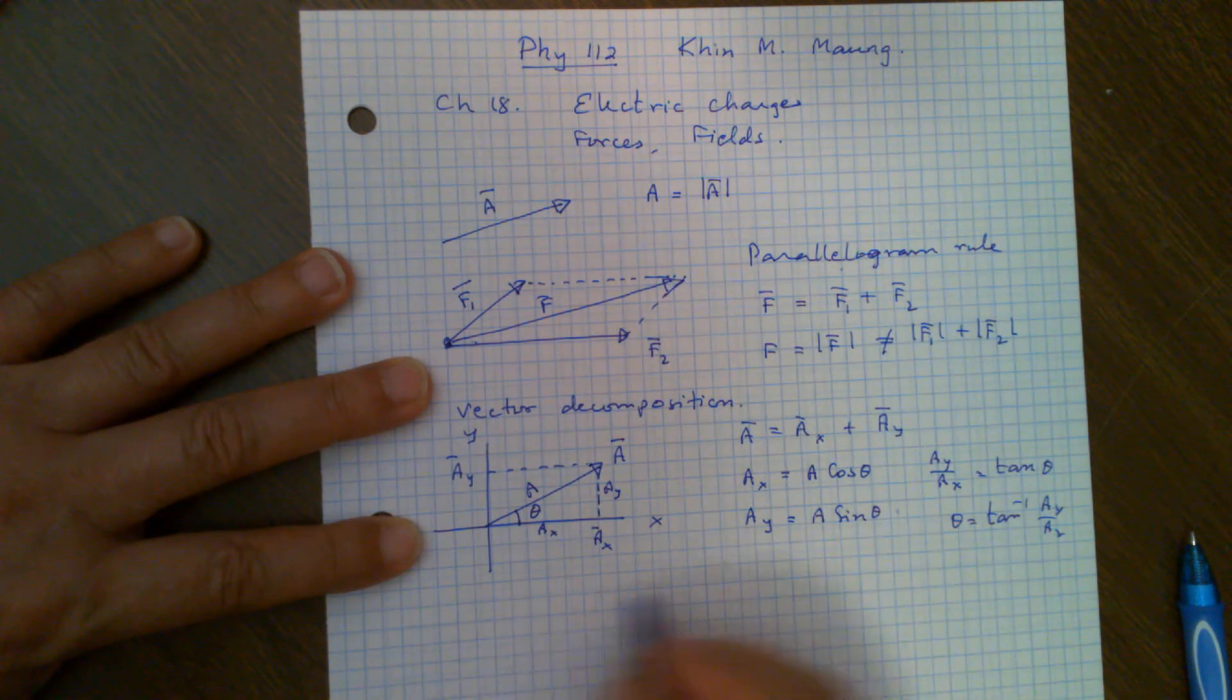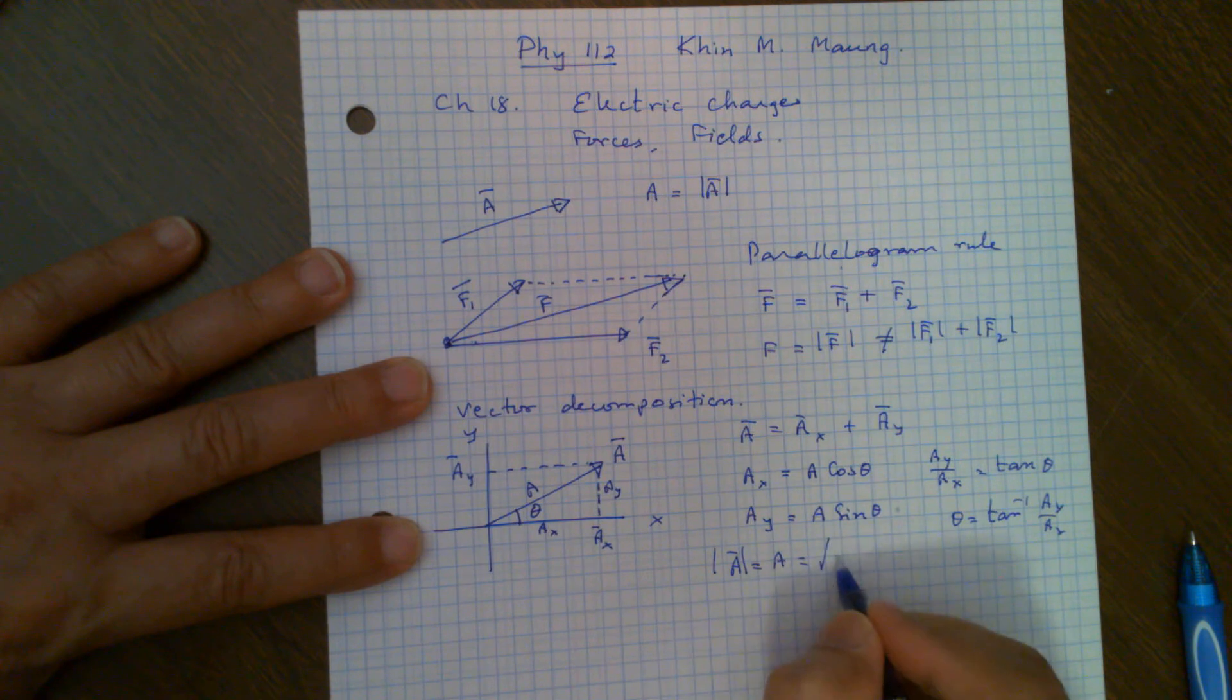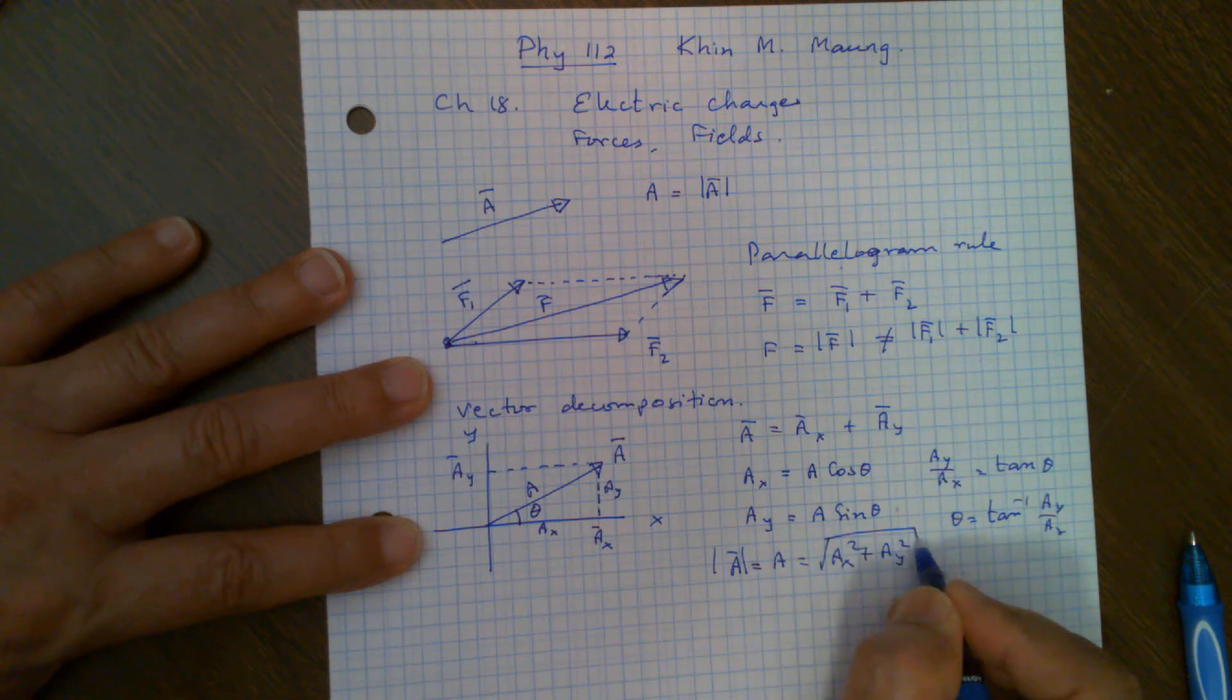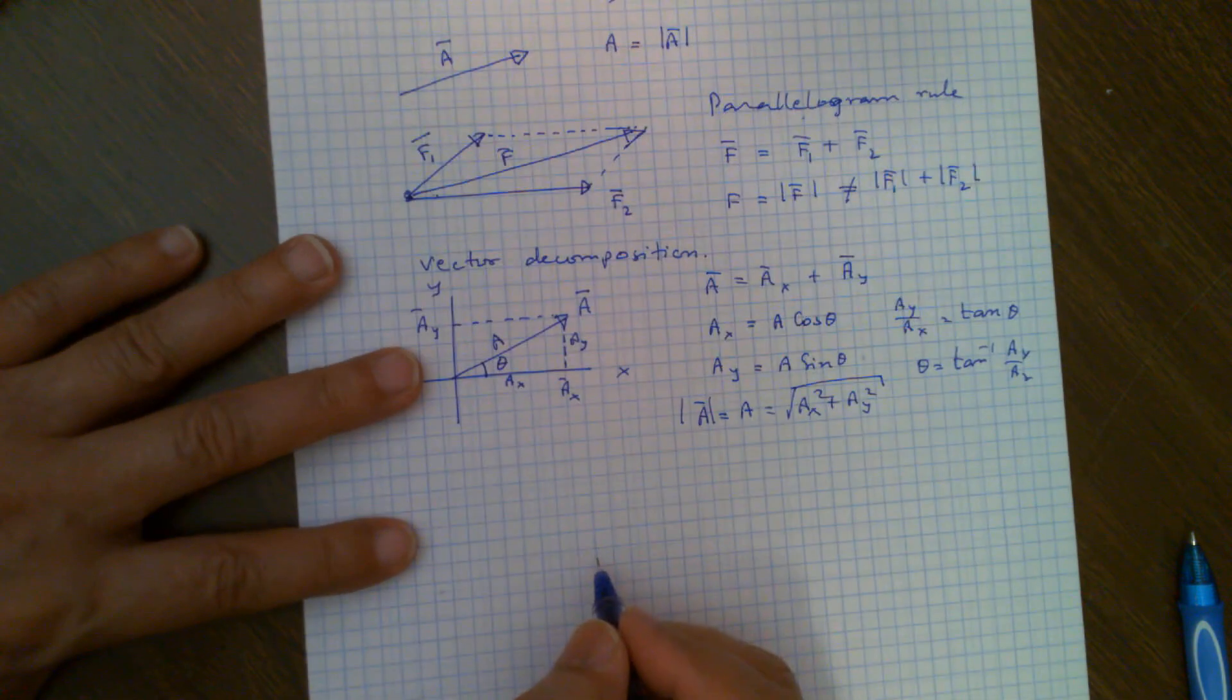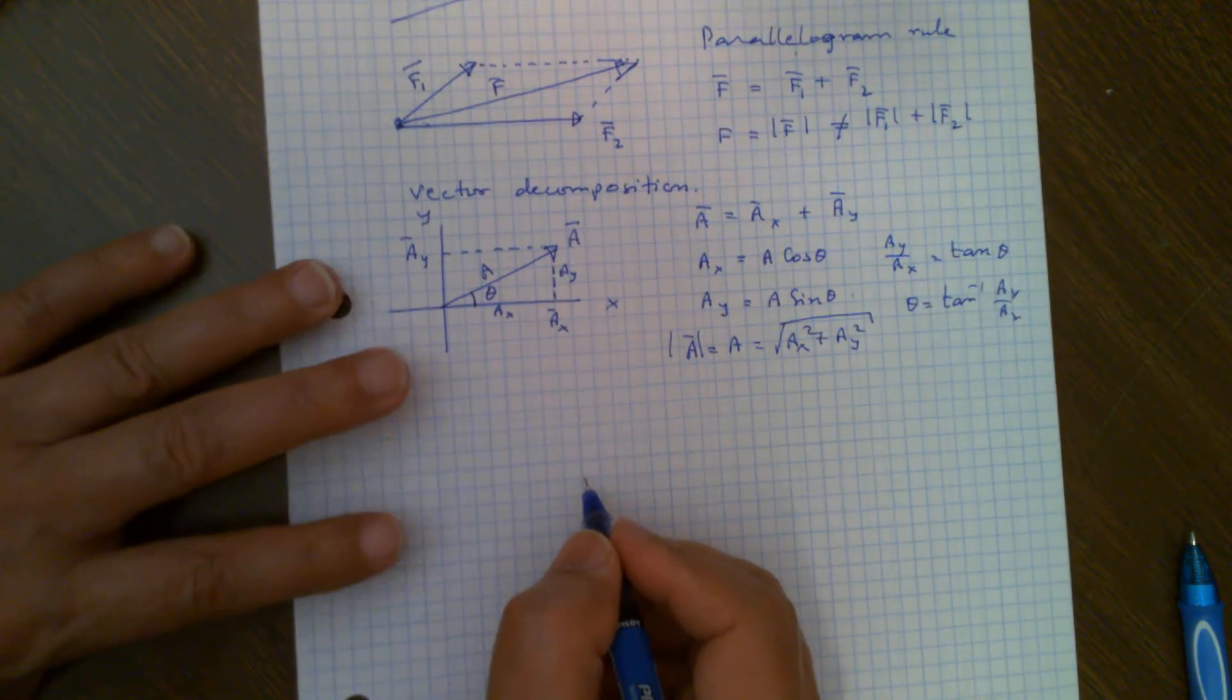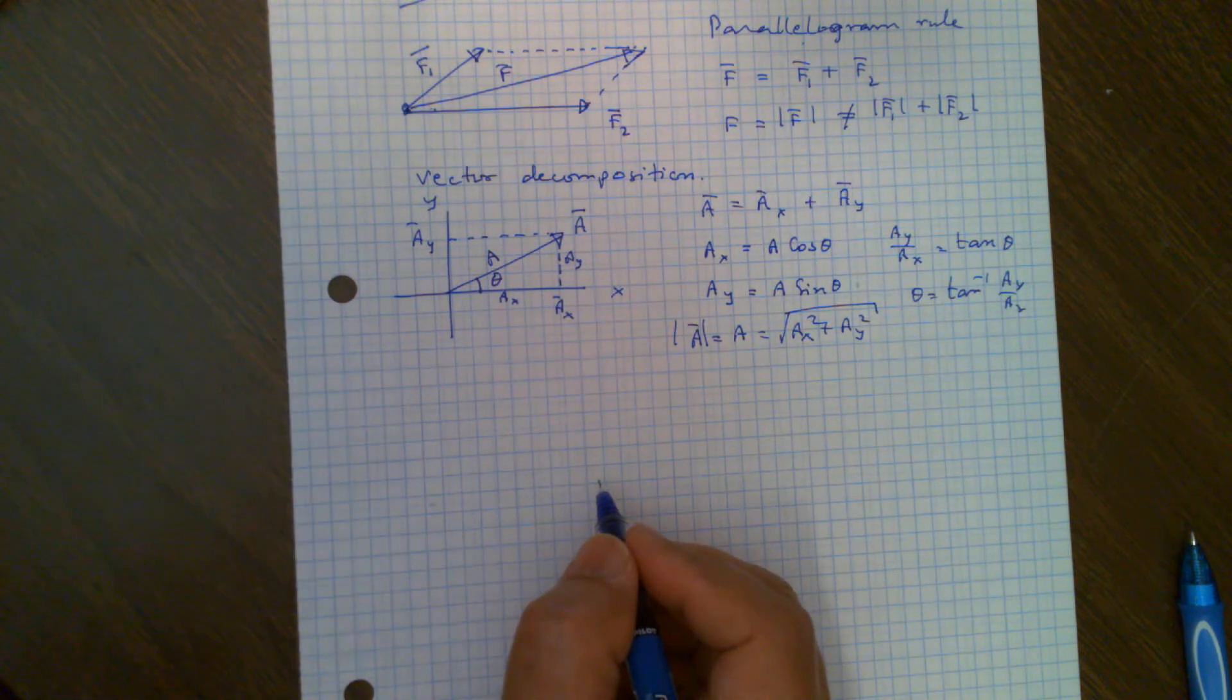And then, again, magnitude of vector A, I can write like this or I can write that, is equal to square root of AX squared plus AY squared. That comes from Pythagorean theorem. So you know all these things. So now that's what you call the vector decomposition. So how can we use that vector decomposition?